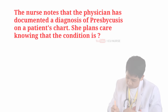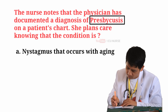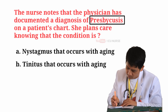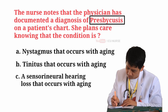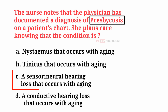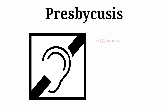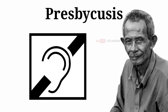A nurse notes that the physician has documented a diagnosis of presbycusis on a patient's chart. She plans care knowing the condition is: A. Nystagmus that occurs with aging. B. Tinnitus that occurs with aging. C. A sensorineural hearing loss that occurs with aging. D. A conductive hearing loss that occurs with aging. And the correct answer is C — a sensorineural hearing loss that occurs with aging. Presbycusis is the loss of hearing that gradually occurs in most individuals as they grow older. Hearing loss is a common disorder associated with aging.